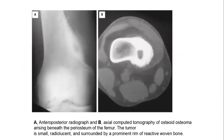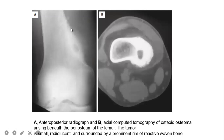Here we can check the radiographic features of osteoid osteoma. Image A is an anterolateral radiograph, and image B is an axial computed tomography of osteoid osteoma arising beneath the periosteum of the femur. The tumour is a small radiolucent lesion surrounded by a prominent rim of reactive woven bone. This is the dense sclerotic bone surrounding the nidus, which is the most distal aspect — supracondylar. The central nidus is visible here.